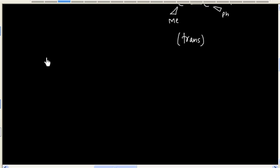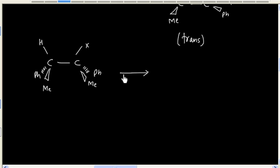This means dehydrohalogenation of this molecule through E1 mechanism gives cis as well as trans alkene.